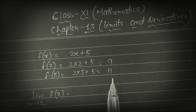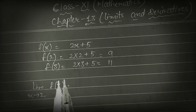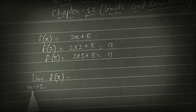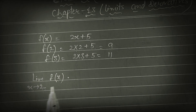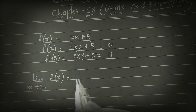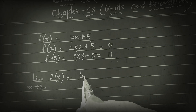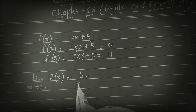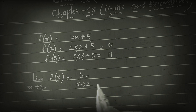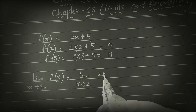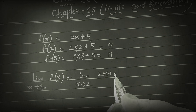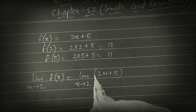So f(3) value is 11. Now suppose limit x tends to 2 of f(x). This is given and the function is the same: 2x + 5. So limit x tends to 2 of 2x + 5 — what is the value of this?